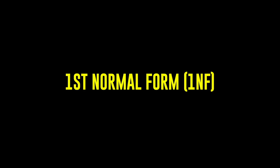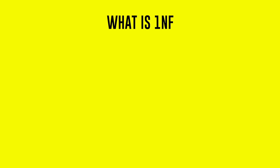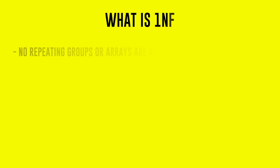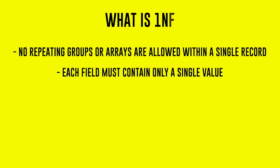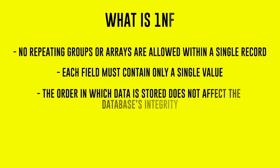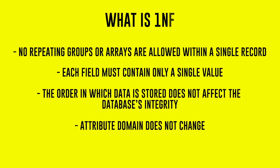First normal form means a single cell shouldn't have more than one value in it. I've seen this at a company where they had multiple project IDs existing in one cell — it was a pain to work with. There must be a primary key that acts as identification, and you remove the need for duplicate rows or columns.